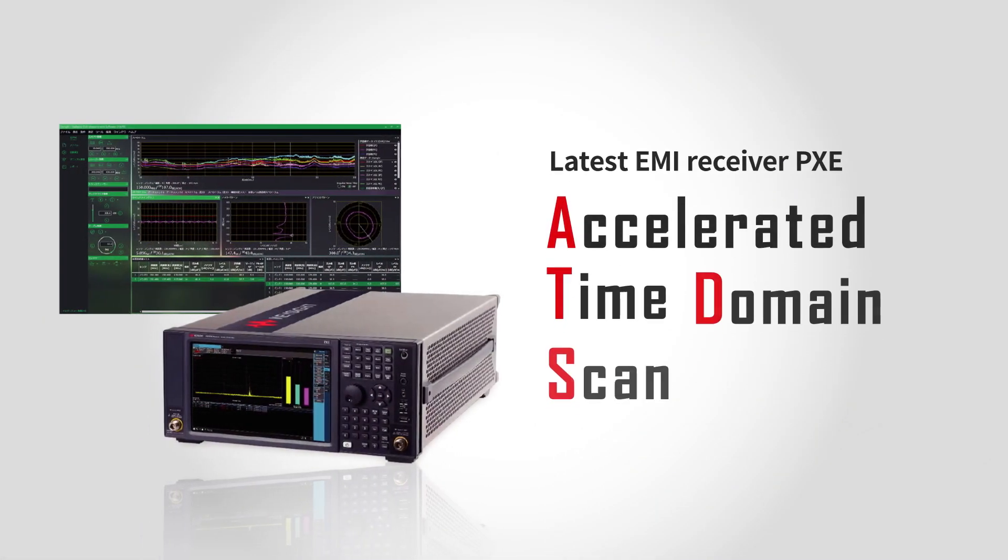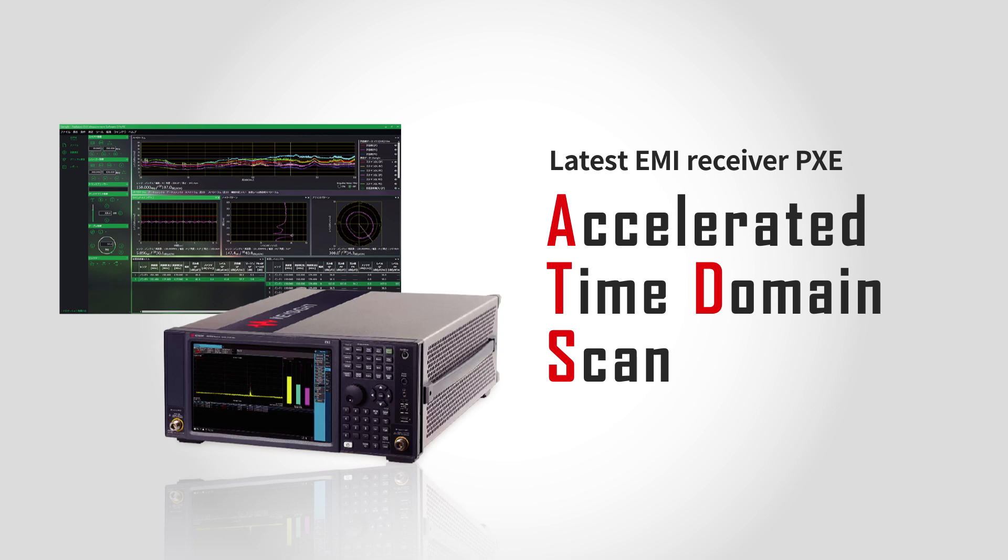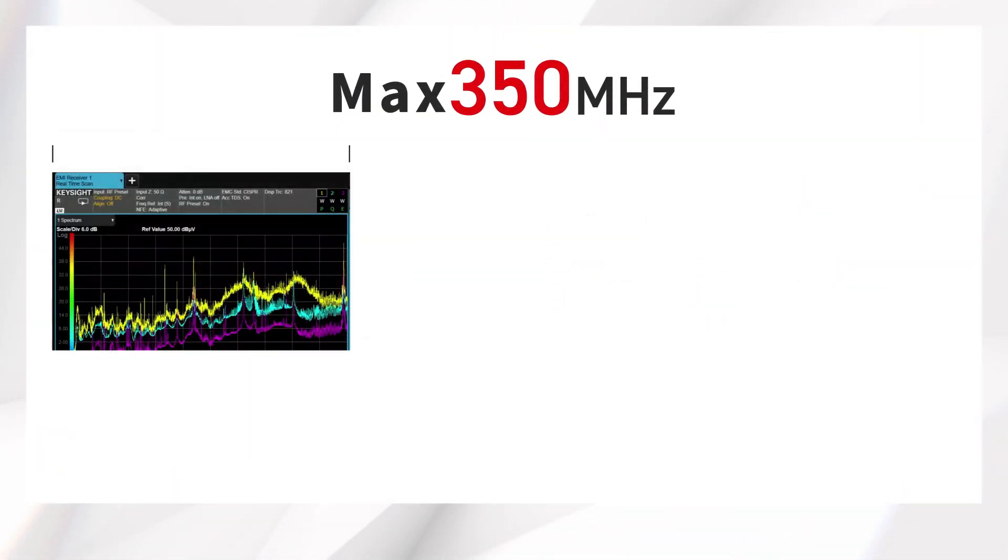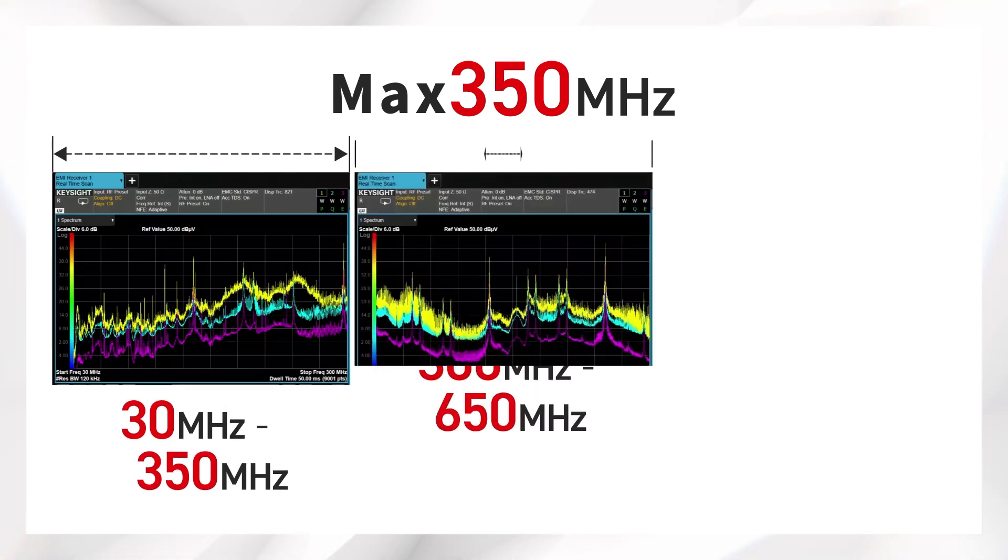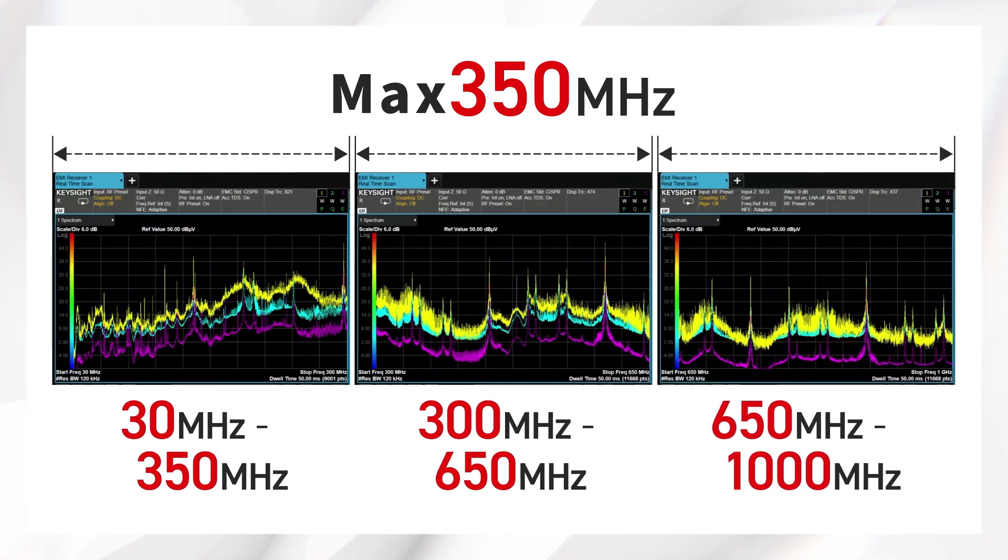The Accelerated Time Domain Scan on the PXE can address these challenges at prescan. The PXE measures and observes noise in a wide frequency range of 350 MHz at a maximum of one time. This is 10 times the range of the traditional time domain scan.